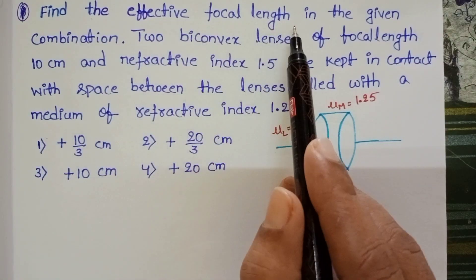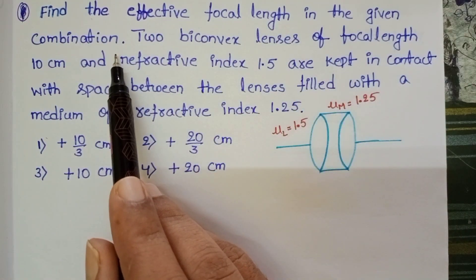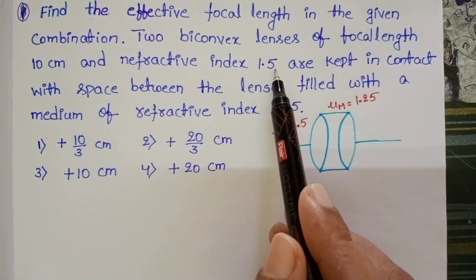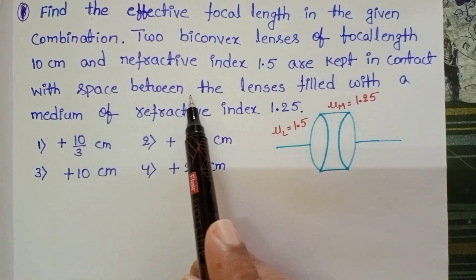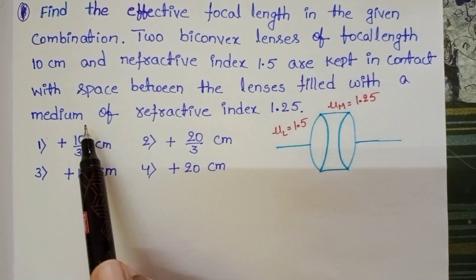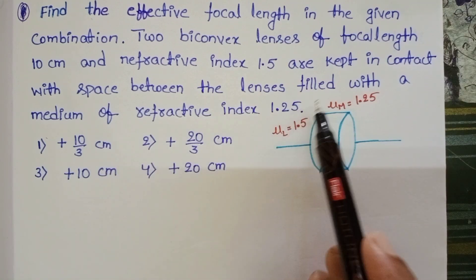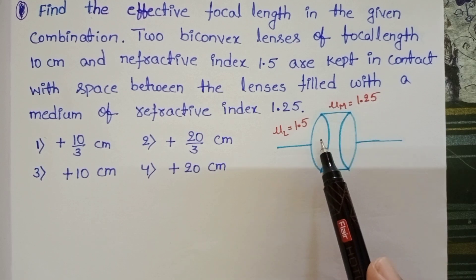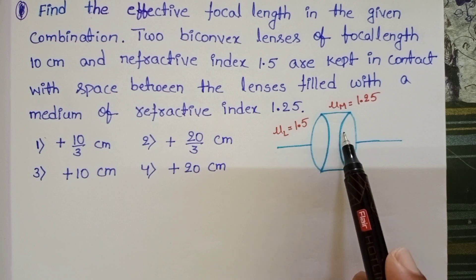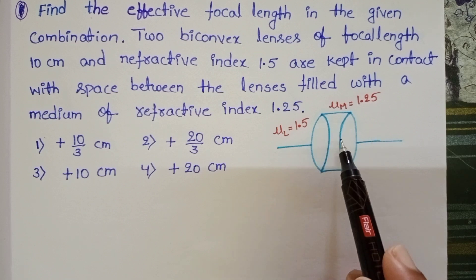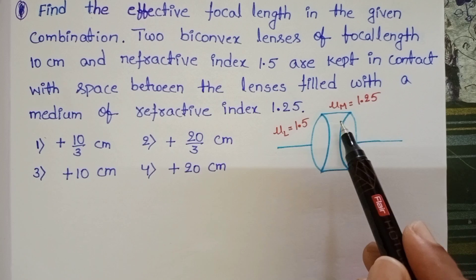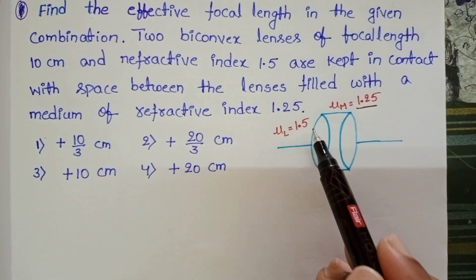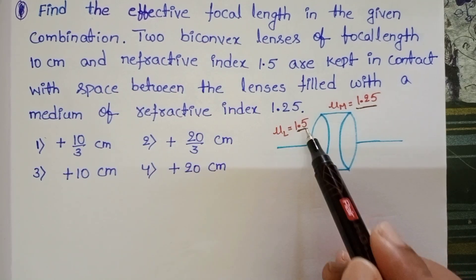Find the effective focal length in the given combination. Two biconvex lenses of focal length 10 cm and refractive index 1.5 are kept in contact, with the space between the lenses filled with a medium of refractive index 1.25. Two biconvex lenses are in contact but in between these two lenses some space is there and it is filled with another medium of refractive index 1.25. Refractive index of lenses is 1.5.